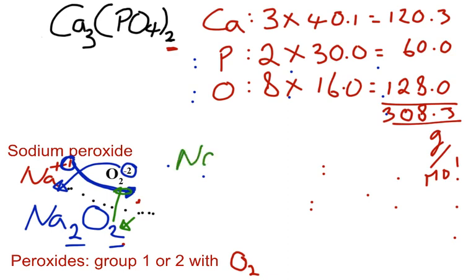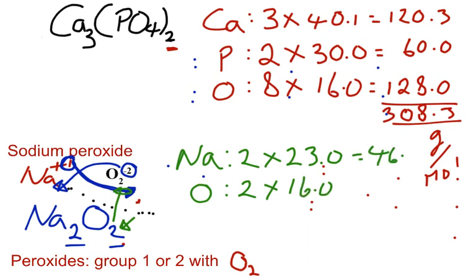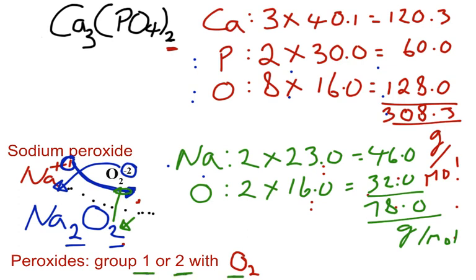So we have Na. We have 2 of them. And on the reference table, Na is approximately 23.0 to 1 decimal place. We have oxygens. We have 2 of them. And they're both going to be 16. So that's going to be 46 and 32. And you add those guys up. So you'll get 78.0 grams per mole. And a simple way to recognize peroxides is simply, you'll have something in group 1 or group 2 with O2 next to it. And you're done.